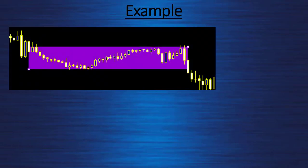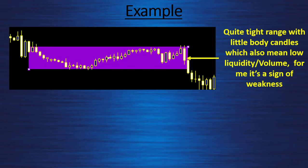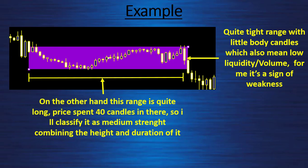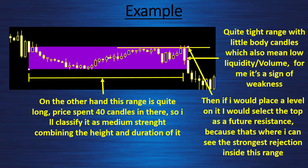On this first chart, we have a quite tight range with little body candles, which also means low liquidity or volume — for me, a sign of weakness. On the other hand, this range is quite long; price spent 40 candles in there, so I classify it as medium strength, combining the height and the duration. If I would place a level on it, I would select the top as a future resistance, because that's where I can see the strongest rejection inside this range.